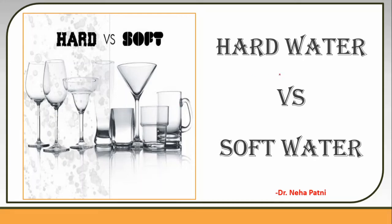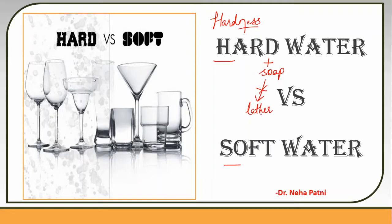Today we are going to discuss the merits and demerits of hard and soft water. We already know that if water possesses hardness it is known as hard water. Hardness is the property of water due to which it does not give lather with soap properly, because there are dissolved salts of calcium and magnesium present in it. When you treat that water with soap, it does not give lather but rather produces a precipitate or scum.